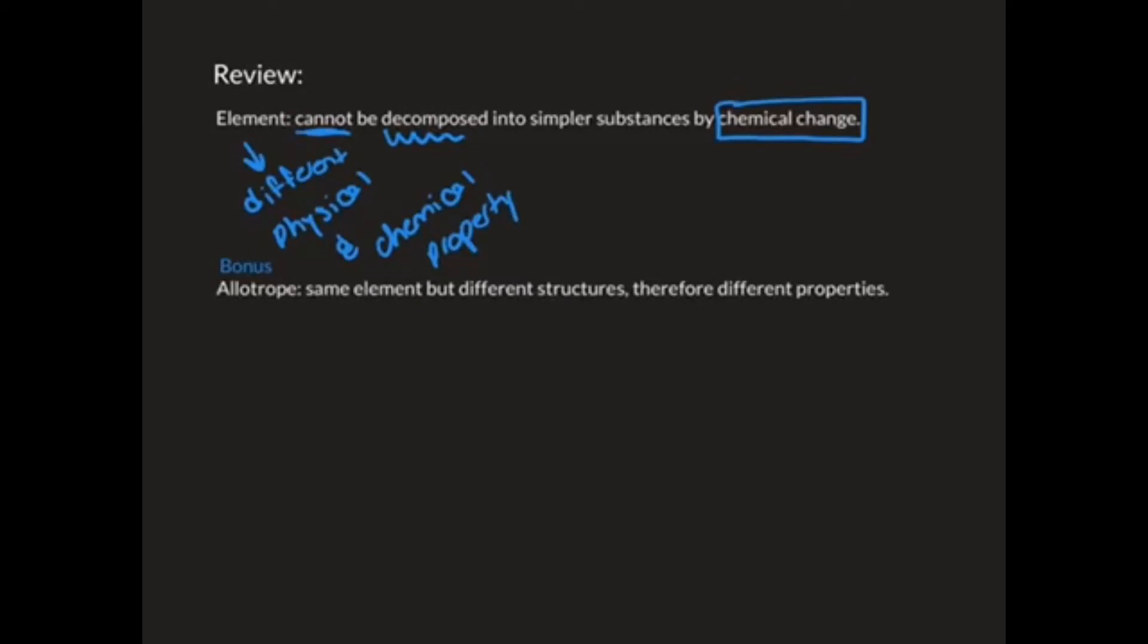An allotrope is the same element, but different structures, therefore they have different properties.